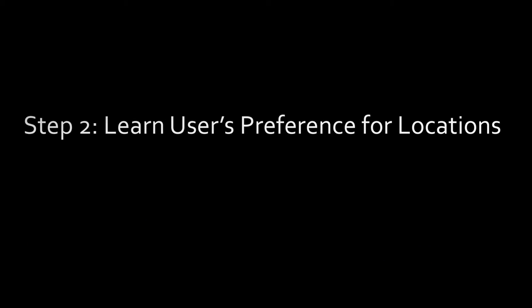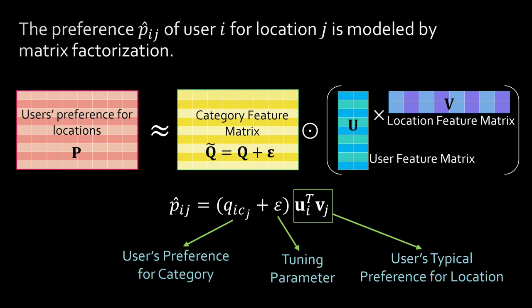In the second step, we propose to learn users' interests based on these three types of check-ins. We propose metric factorization to model a user's preference for a location with user, location, and category feature metrics.